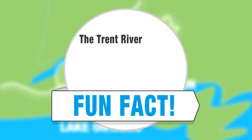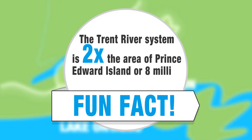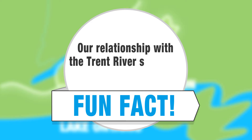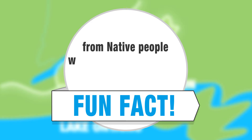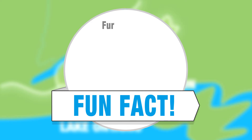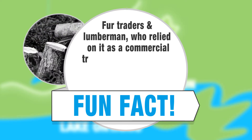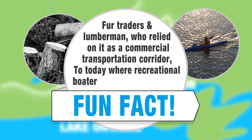Did you know? The Trent River system is twice the area of Prince Edward Island, or 8 million hockey rinks. Our relationship with the Trent River stretches back thousands of years — from native people who used the river as an ancient canoe highway, to fur traders and lumbermen who relied on it as a commercial transportation corridor, to today, where recreational boaters travel the river daily.